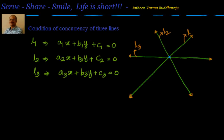Hello friends, welcome back. Hearty welcome to you. In this session let's look at how to find out the condition of concurrency of three lines. Let us say that there are three lines: a1x + b1y + c1 = 0, a2x + b2y + c2 = 0, and a3x + b3y + c3 = 0, called l1, l2, l3. The meaning of concurrency is that all three lines pass through a single point — they have the same point of intersection.